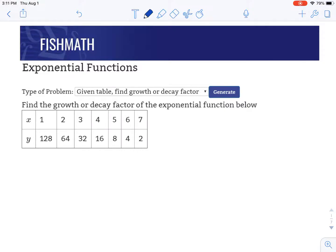So what we're going to look for here is what are we multiplying by every time as we go from one x to the next x to the next x. What is the constant amount we're multiplying by every single time? And that'll be the growth or decay factor.